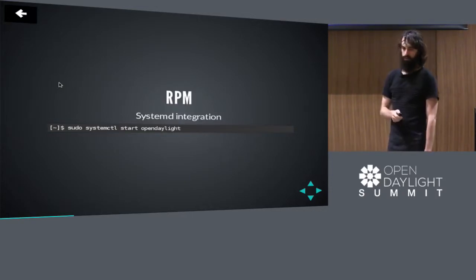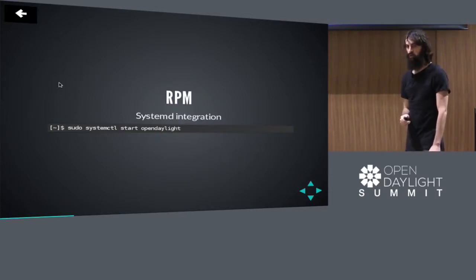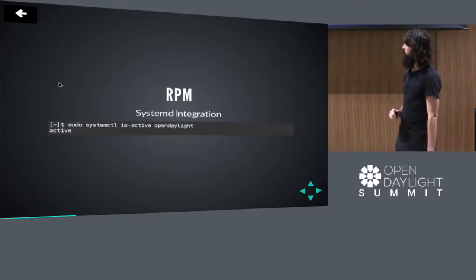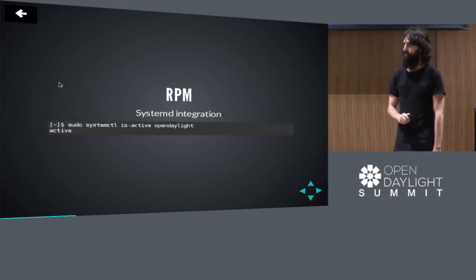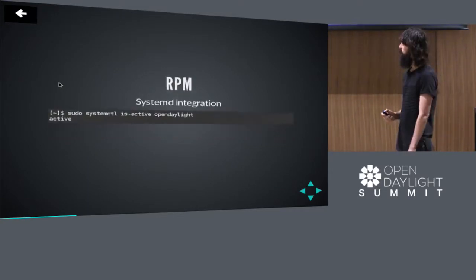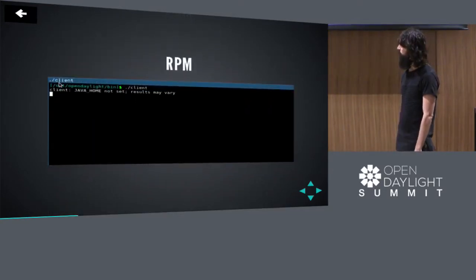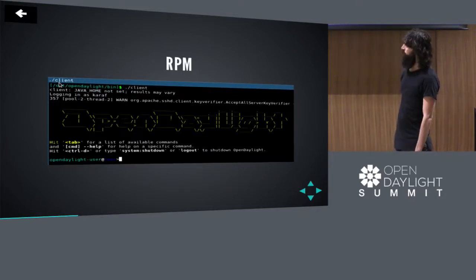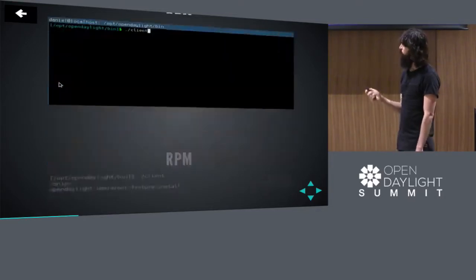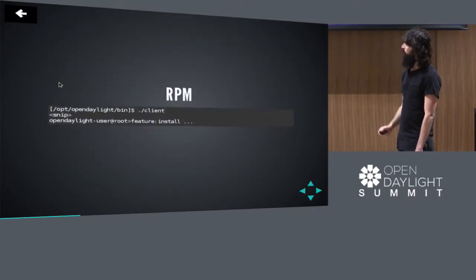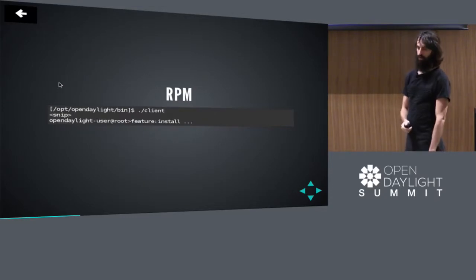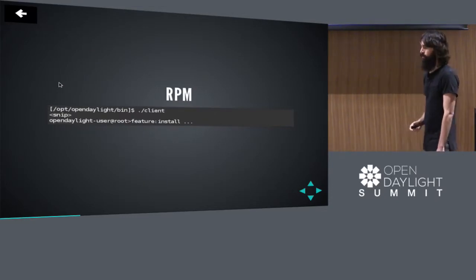We can then just do systemctl start opendaylight to spin up ODL's process, and verify it's active with helpers like is-active. We can grab our Karaf shell using the client executable, and then do things like feature installs or whatever else we need to do with OpenDaylight.